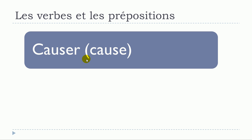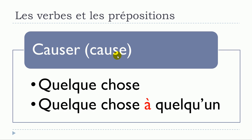The next verb is causer, and the translation is quite easy. Causer quelque chose — no preposition. Or causer quelque chose à quelqu'un.